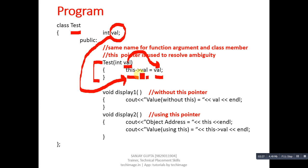So you can use this pointer with class members and without 'this' you can use parameters of the functions. And this is a pointer, that's why this arrow notation is used, because we cannot use dot operator with pointers. So if you want to access members through pointer, then arrow notations are required. Then the next function is display1, which is printing val without this pointer.